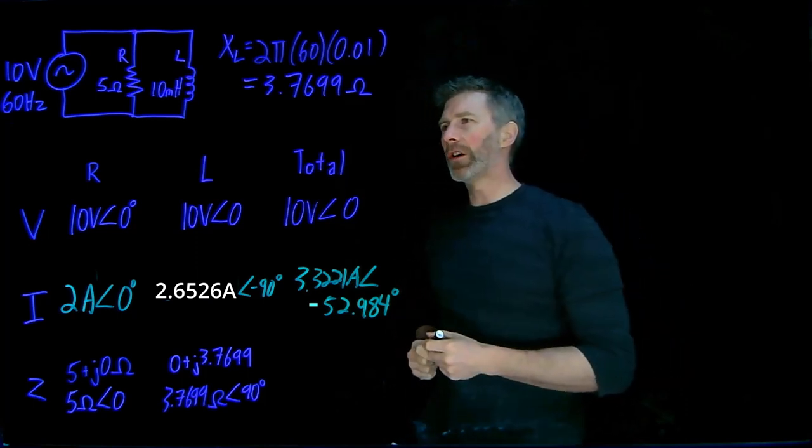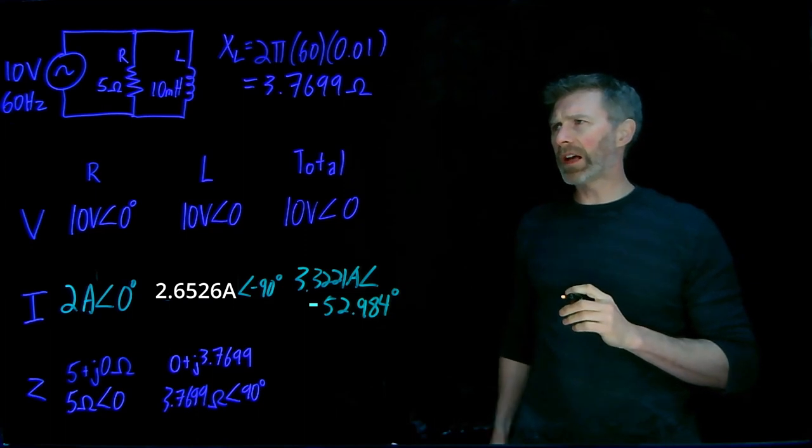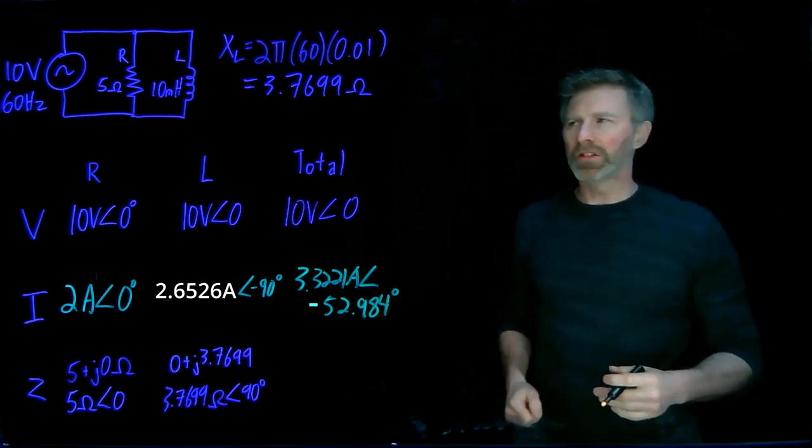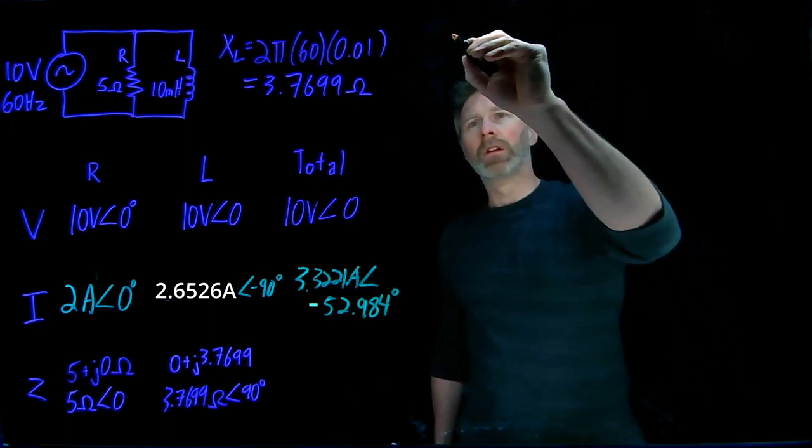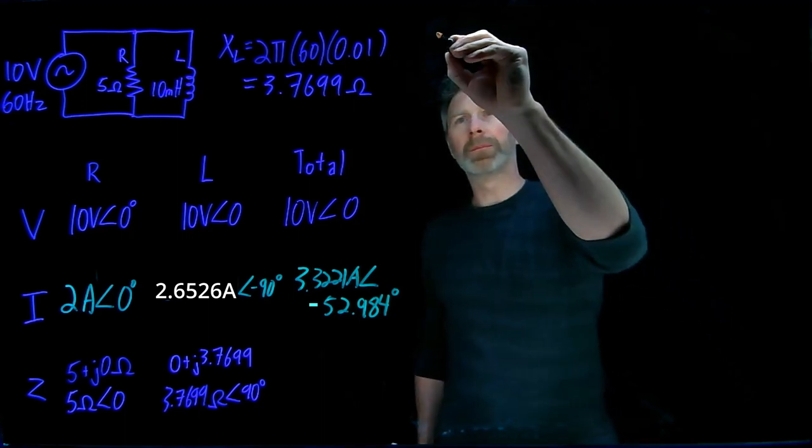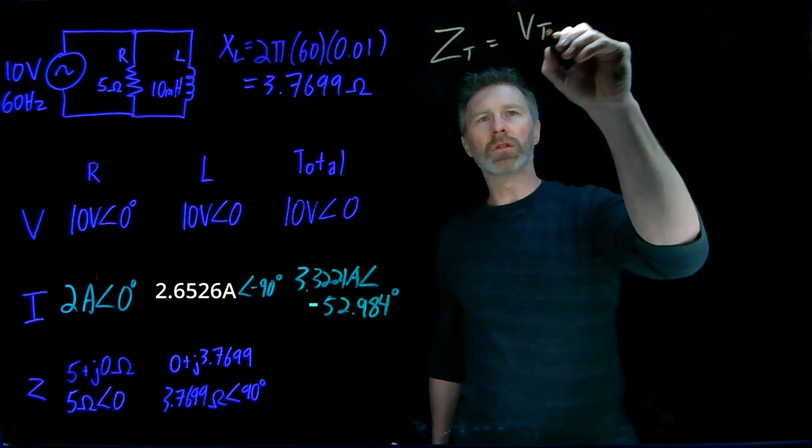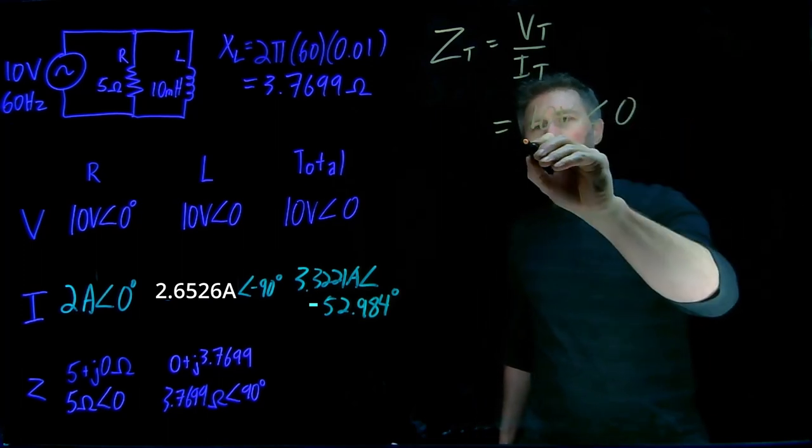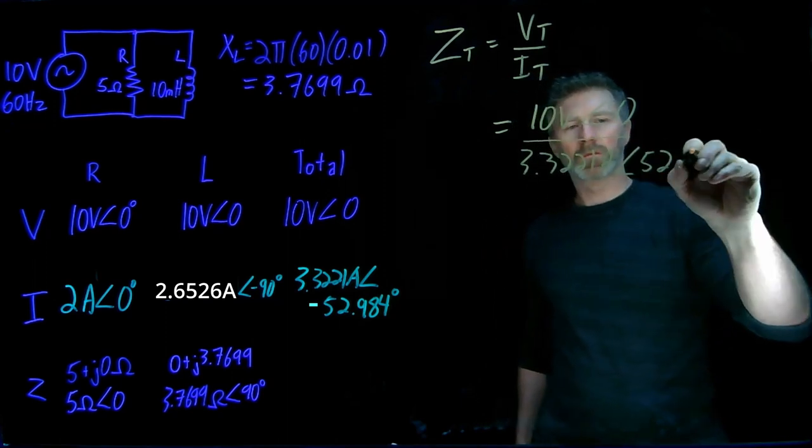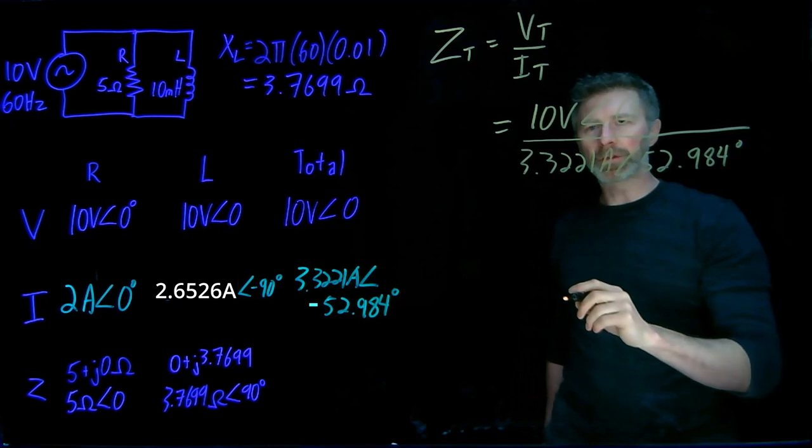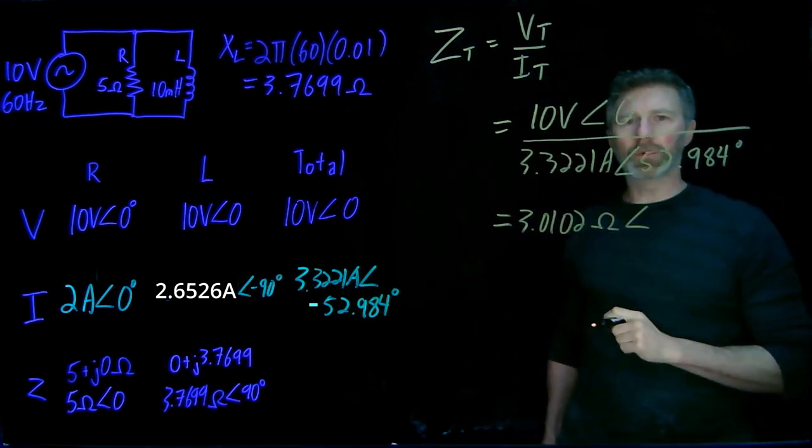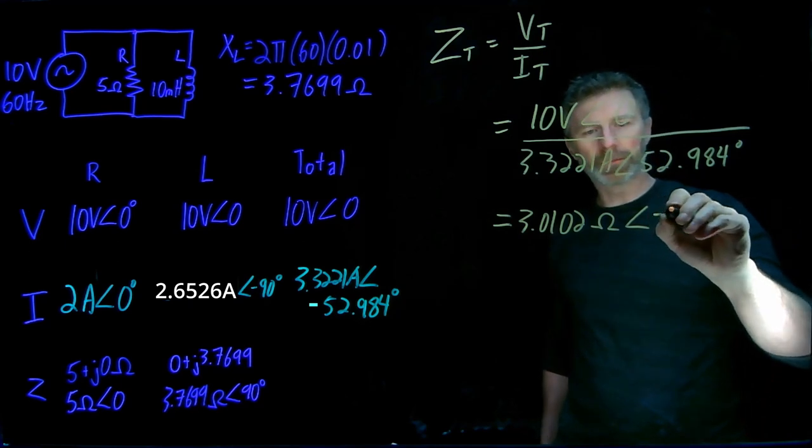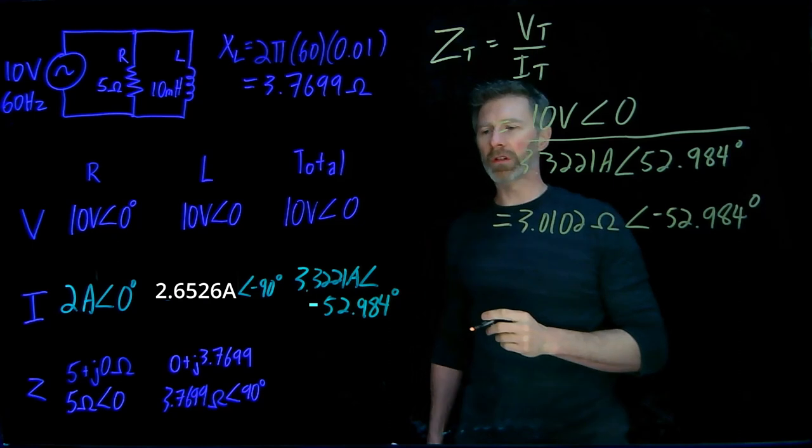One last thing to do is figure out the total impedance that this voltage source sees. There are a couple ways to do it. I'm going to do what I think is the easier way, and then I'll show you the more challenging method - well, it's not really challenging, just more steps involved. To do the easier way, we use Ohm's law again. The total impedance equals the total voltage divided by the total current. We know these two values: 10 volts with an angle of zero. When we do the division, 10 volts divided by 3.3221 gives 3.0102 ohms magnitude, and the phase angle is 0 minus 52.984, which gives negative 52.984 degrees. That's the total impedance.